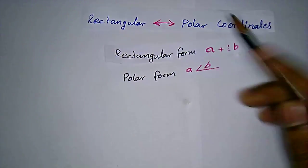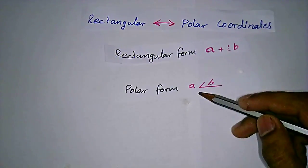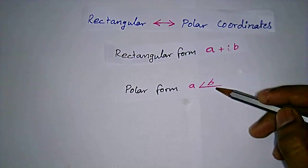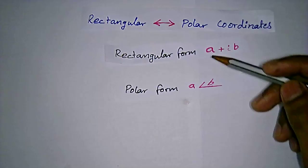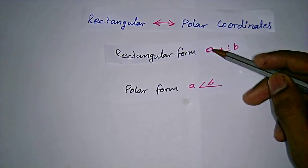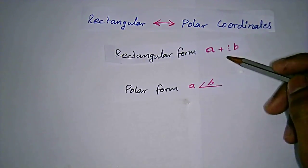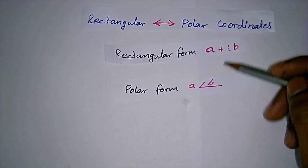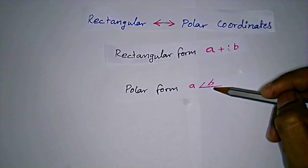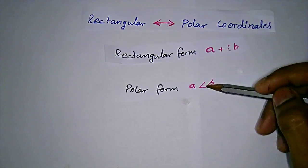For polar we have the modulus value and the angle of that rectangular form. This complete A, B coordinates will be like here. The angle between these two will be in the polar form.